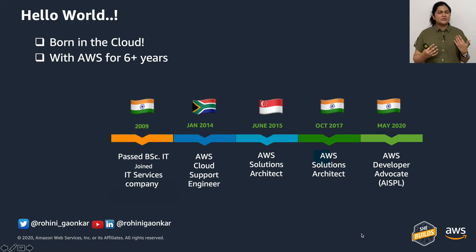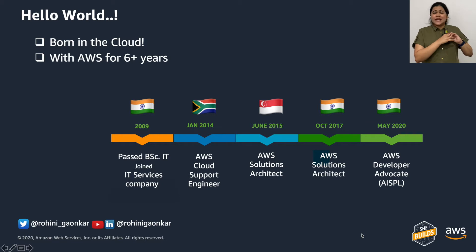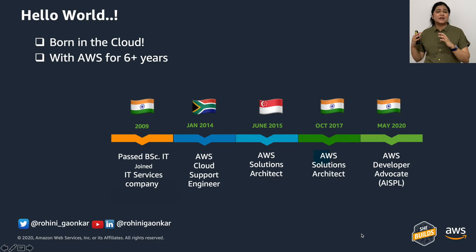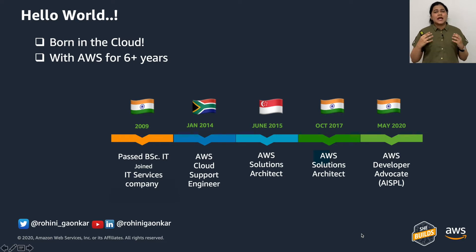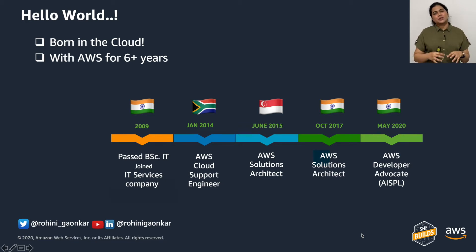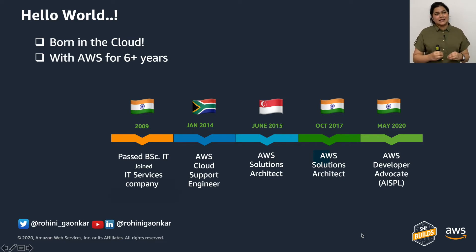I've been a solution architect for almost five years here at AWS, working with customers ranging from those with no workload on the cloud to customers with millions of dollars of investment on the AWS platform. That experience is why this year I decided to move to a developer advocate role — I want to work with the community and make it simpler to get onto the AWS platform.